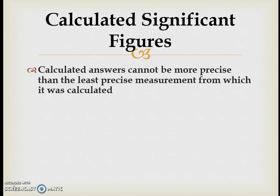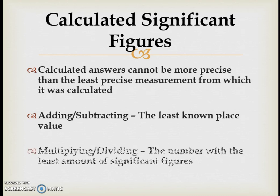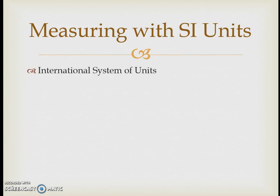If it's a counted number, it's really an infinite number of significant digits because you know it's exact. When doing calculations with these numbers, there are rules because you can't end up with a number more precise than any of the numbers you started with — you can't gain significant digits through calculations. When adding or subtracting, round to the least known decimal place. When multiplying or dividing, round to the number with the fewest significant figures.